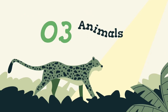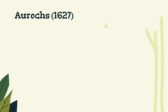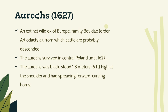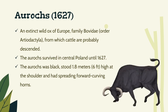Number 3: Animals. Aurochs. An extinct wild ox of Europe, family Bovidae, order Artiodactyla, from which cattle are probably descended. The Aurochs survived in Central Poland until 1627. The Aurochs was black, stood 1.8 meters (6 feet) high at the shoulder, and had spreading, forward-curving horns.